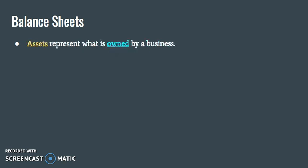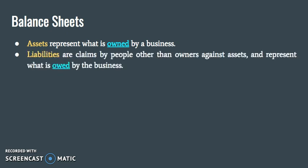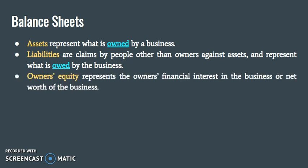Assets represent what is owned by a business, and liabilities are claims by people other than the owners against the assets, and represent what is owed by the business. And owner's equity represents the owner's financial interest in the business, or the net worth of the business.